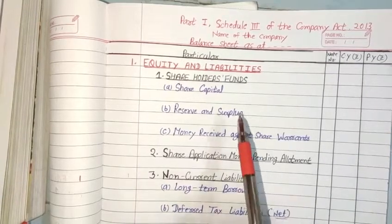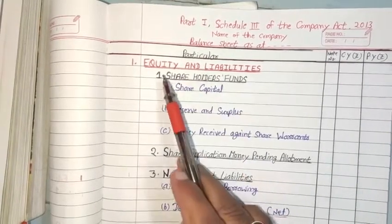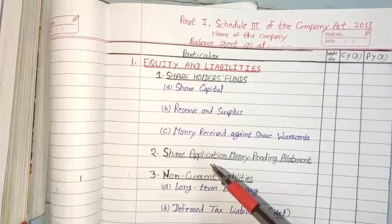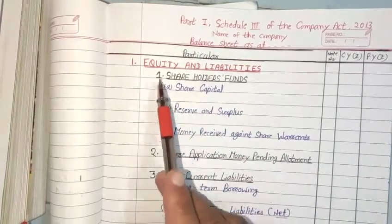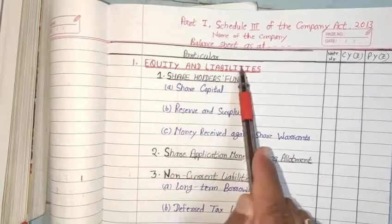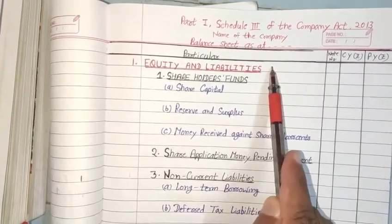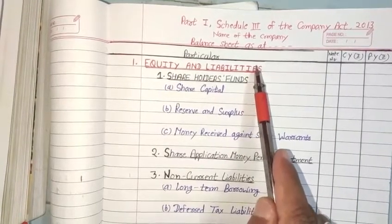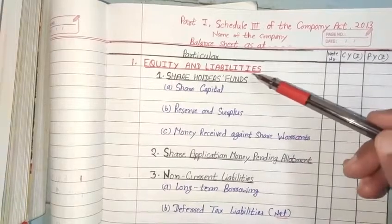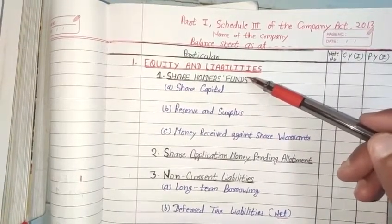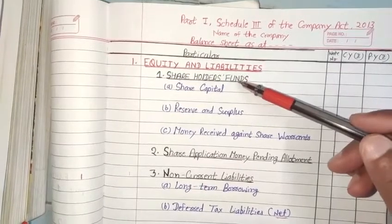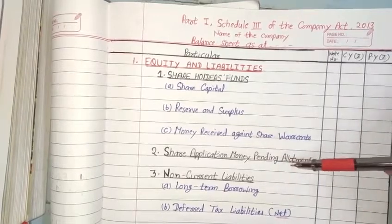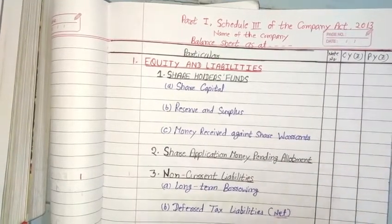Under this, we have discussed a few points — what are the main headings and what are the sub-headings in the liability side. In the liability side, Equity and Liability is the main-main heading. And there is another main-main heading which is Non-Current Assets. There are two main-main headings as we already discussed. In the liability side, there are four main headings: first is Shareholder Fund, second is Share Application Money Pending, third is Non-Current Liability, and fourth is Current Liability.